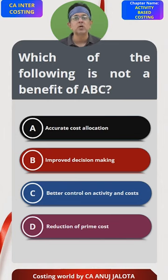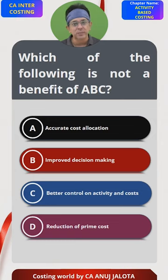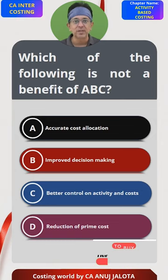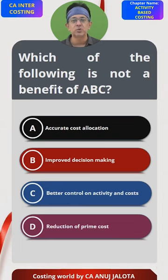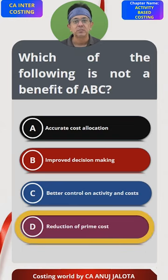Option D: reduction of prime cost — this cannot be correct, because activity based costing is not concerned with direct material and direct labor, which are direct costs. Activity based costing only applies to overhead cost. Therefore, the answer is D — that's the correct answer.